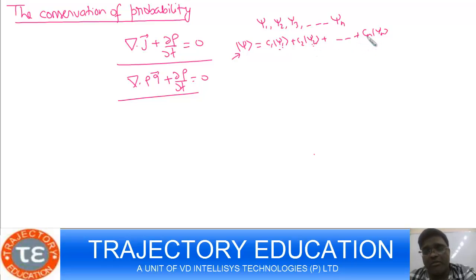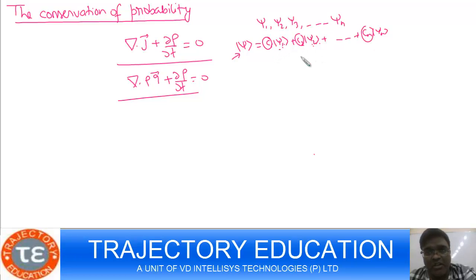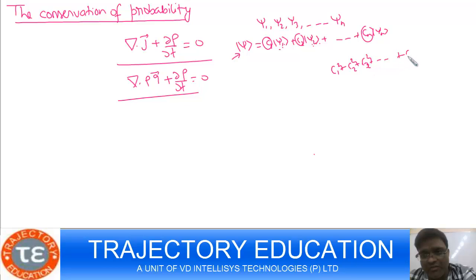|cn|² is the probability of finding the particle in state ψn. As time passes, ψ1, ψ2, ... ψn may not be changing with time — if we assume the potential energy is constant, these eigenstates are stationary states and hence they are not changing with time. But the probability amplitudes c1, c2, ... cn might be changing with time. The normalization condition requires |c1|² + |c2|² + ... + |cn|² = 1.